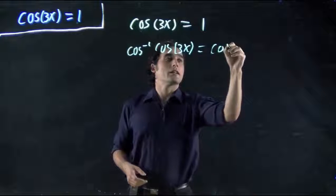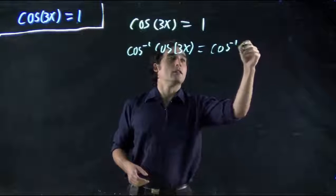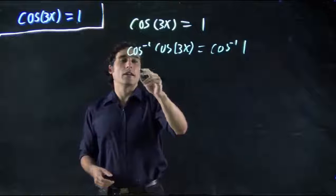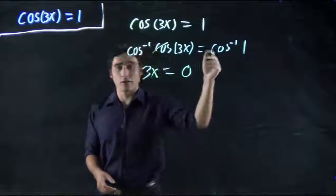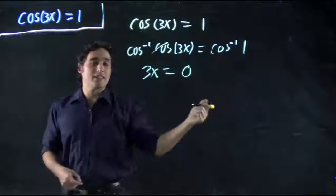So cos to the minus 1 of 1. And what do we get? These cancel. We get 3x equals 0 again. Cos to the minus 1 of 1 is 0.